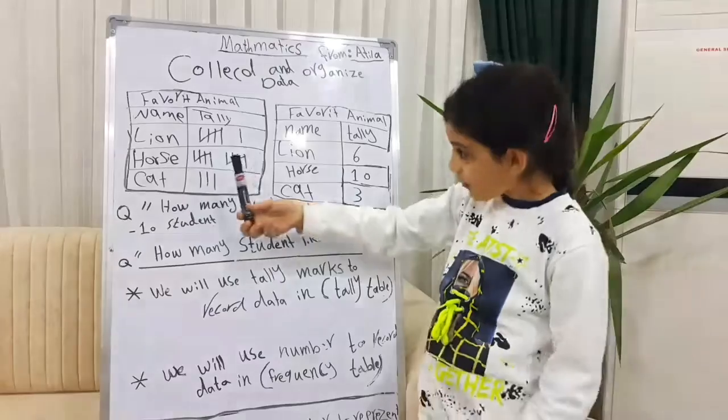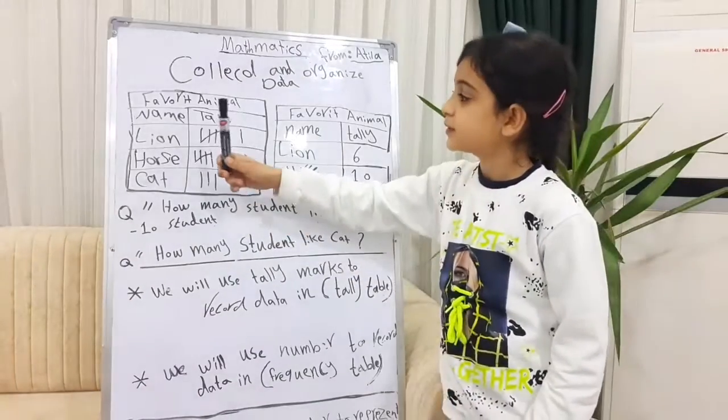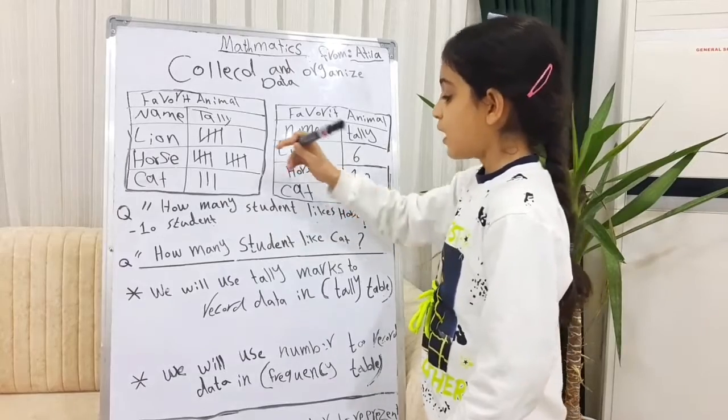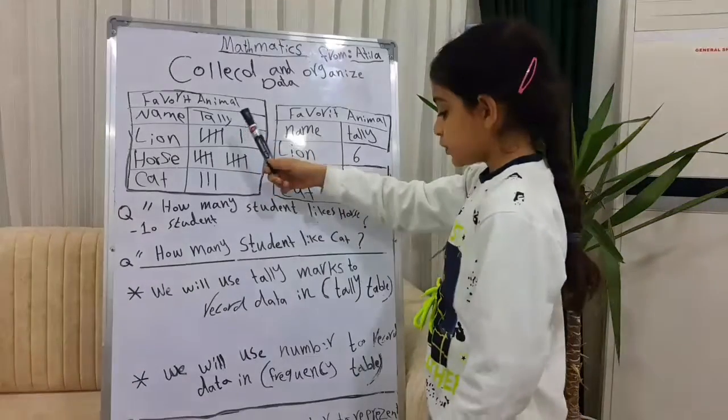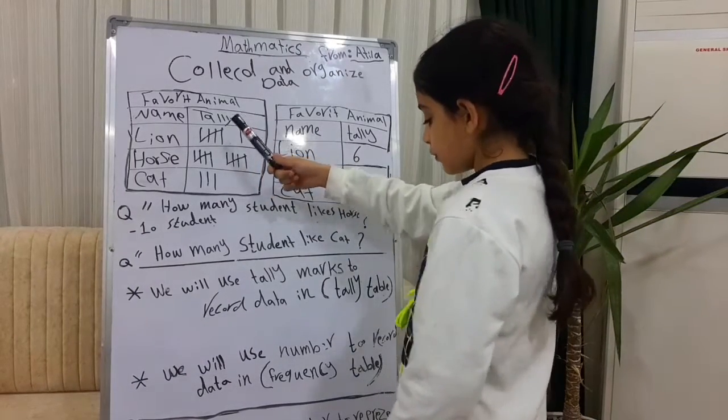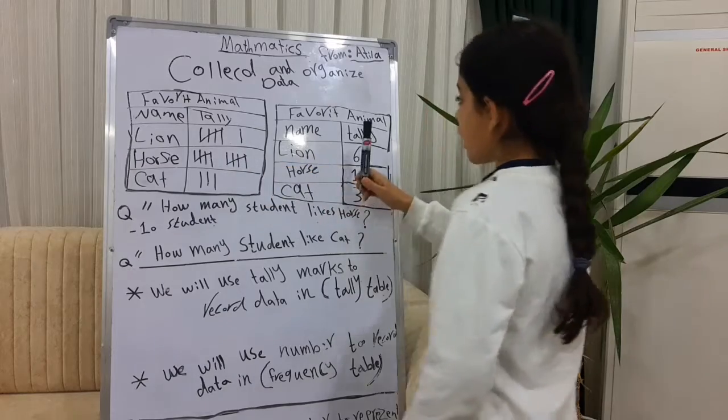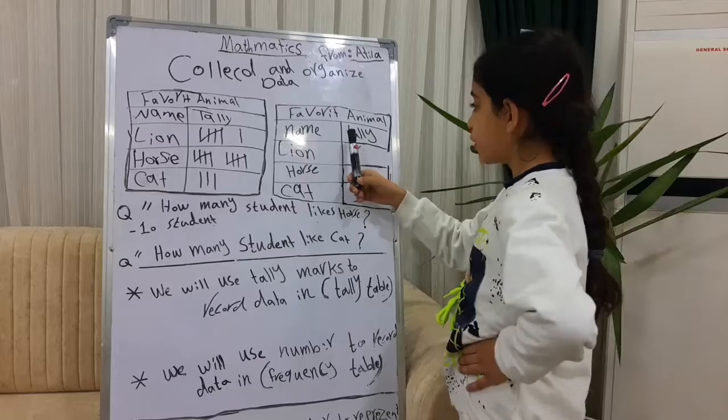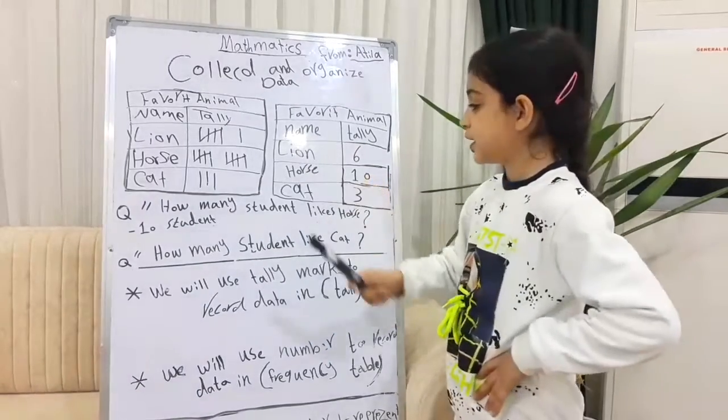In this topic, we have two tables. The names are Tally table and Frequency table. A Tally table uses lines to represent data. A Frequency table uses numbers to represent or record data.